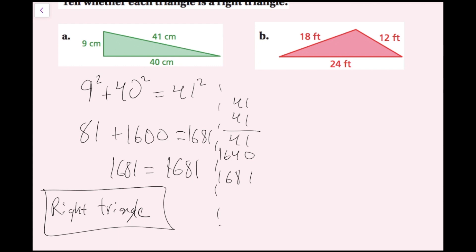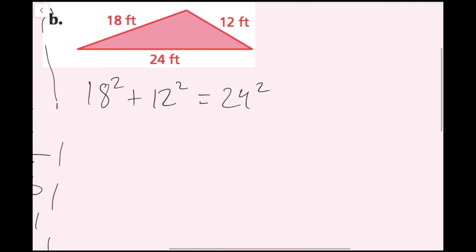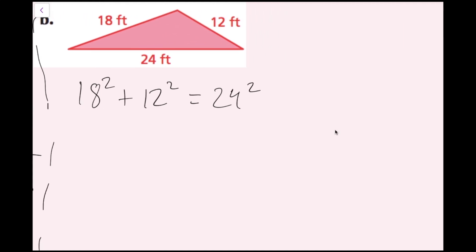Now I'm going to try part B. My longest side is 24 and my shorter sides are 18 and 12. So I'm going to do 18 squared plus 12 squared and check if that equals 24 squared. I know 12 squared is 144, 18 squared is 324, and 24 squared is 576.